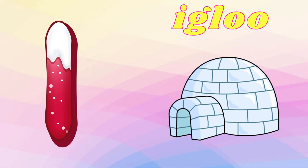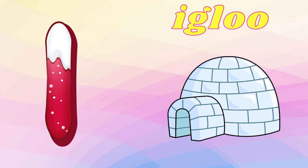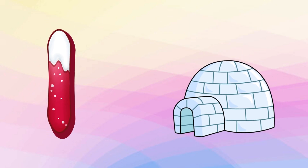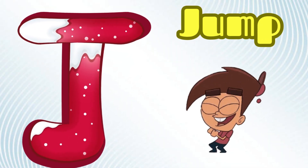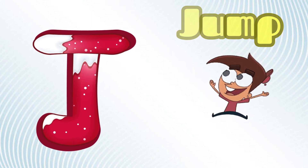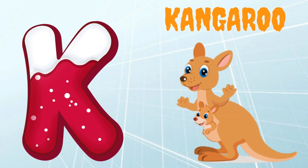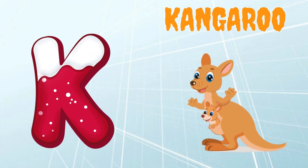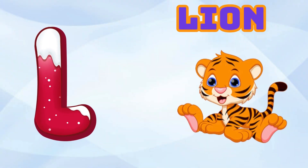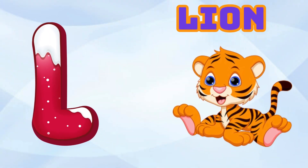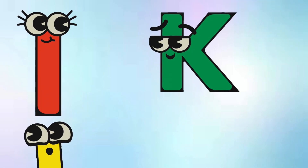I is for Igloo, I-I-Igloo. J is for Jump, J-J-Jump. K is for Kangaroo, K-K-Kangaroo. L is for Lion, L-L-Lion.